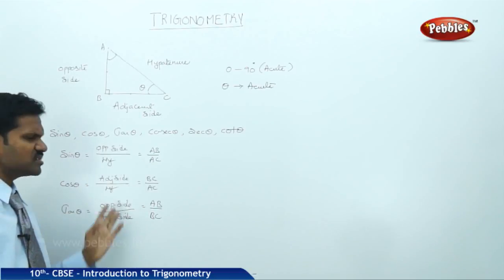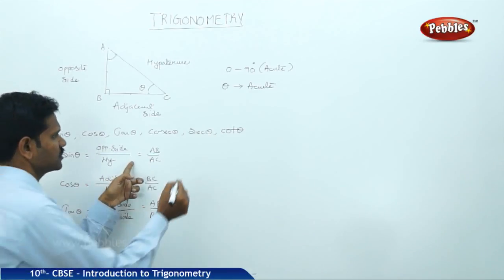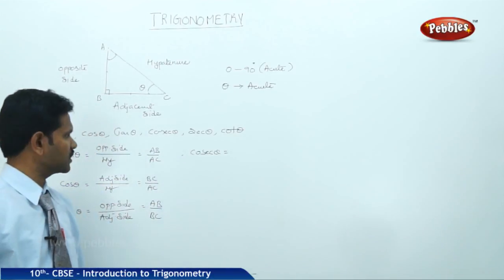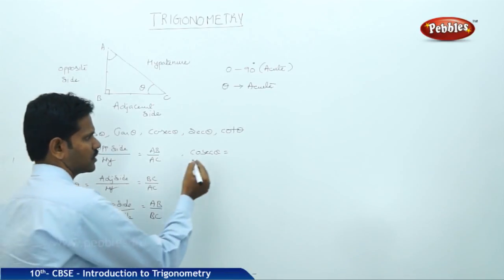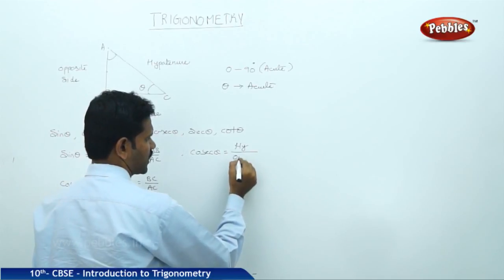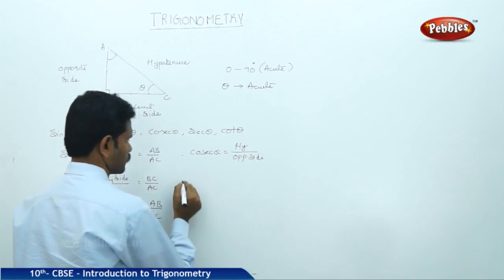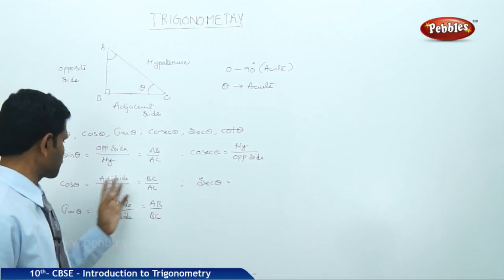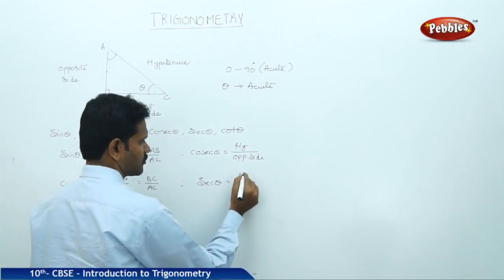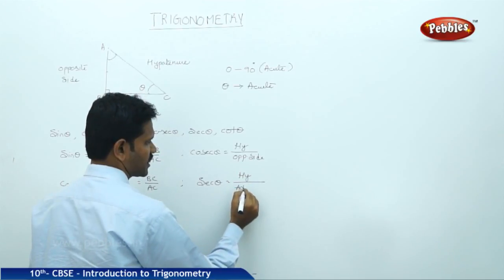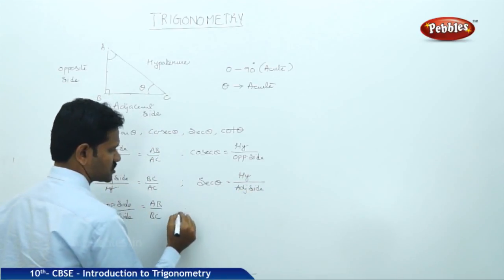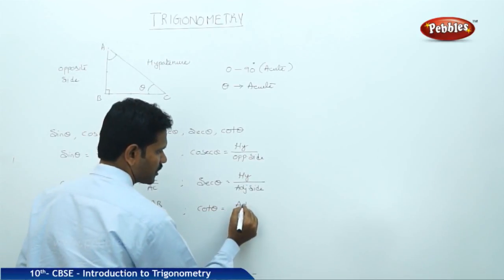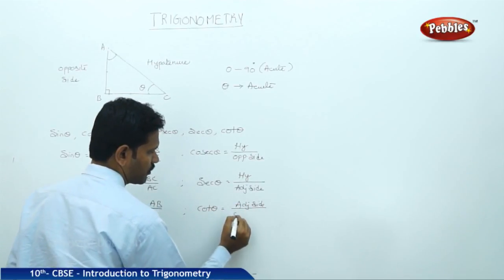Based on these three, the next three are generated. Cosecant theta is nothing but the reciprocal of sine theta — that is, cosecant theta = hypotenuse by opposite side. Next, secant theta, which is the reciprocal of cos theta, is hypotenuse by adjacent side. Next, cot theta, which is the reciprocal of tan theta, is adjacent side by opposite side.